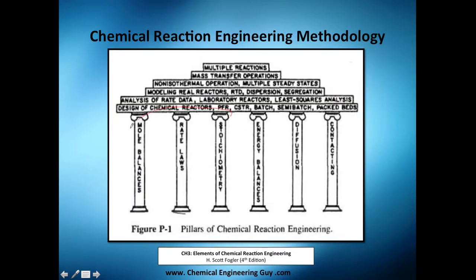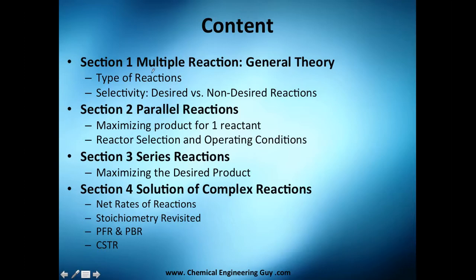So where are we? We still have this here. What are we analyzing in this moment is essentially multiple reactions. Now let me show you the content, the overview of the course. I split it into four sections, which is section number one. It's a little bit theory or general theory about multiple reactions. What type of reactions exist? How do we classify them? Then we start studying the selectivity of a desired product and a non-desired product. And we start speaking out selectivity and yield.